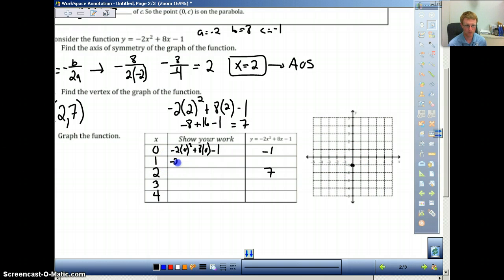Move to the next one. Negative 2 times 1 squared plus 8 times 1 minus 1. So, we have negative 2 plus 8 is 6. 6 minus 1 is 5. So, we have 1 comma 5 is one of our values.